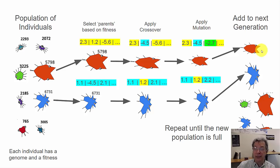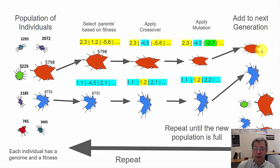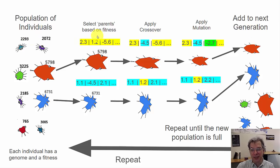We repeat this process until the new population is full — the next generation is created. It's typical to use a fixed-size population so we know when it's full. Then we repeat the process, taking our new generation and selecting parents, applying crossover, applying mutation, and so forth.